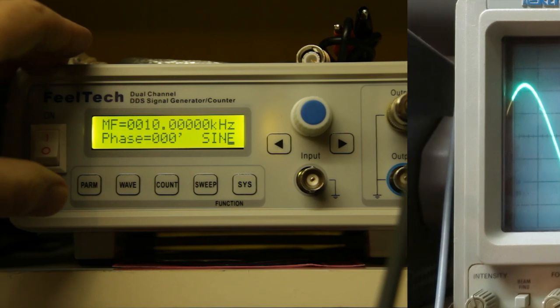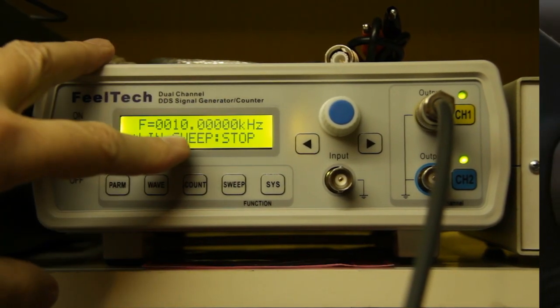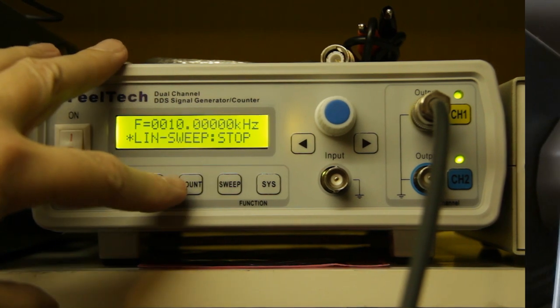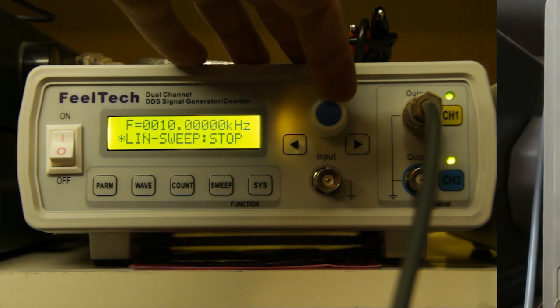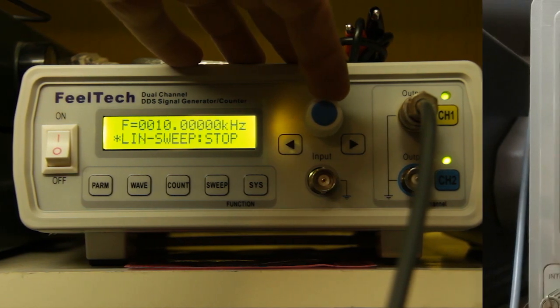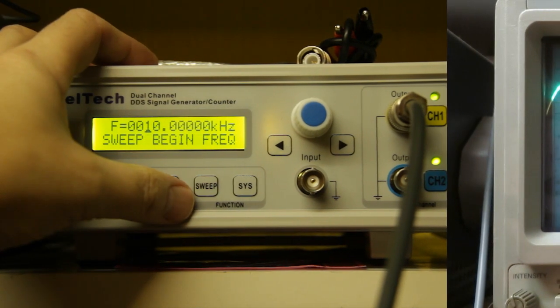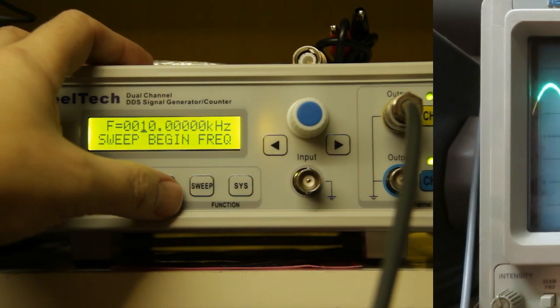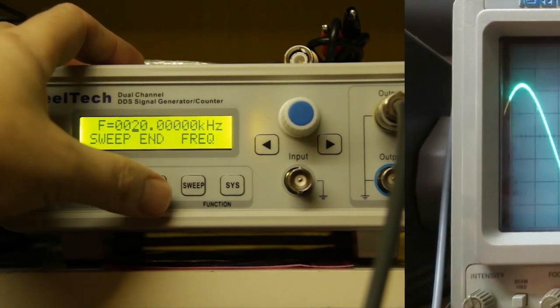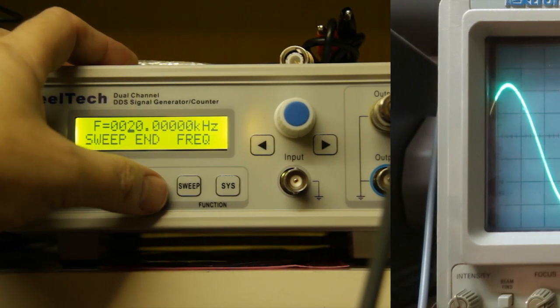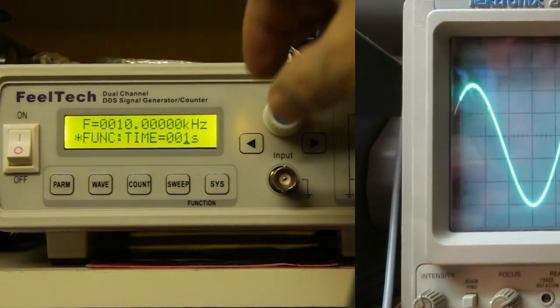I switch back to sine waveform to demonstrate the sweep function. It is changeable between linear and log sweep. Start frequency is 10 kHz, end frequency is 20 kHz, and I will change the duration of sweep to 3 seconds.